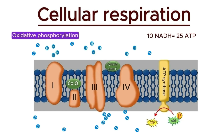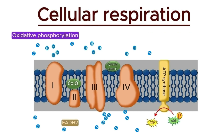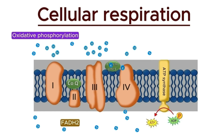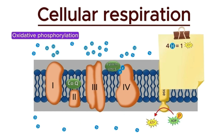Now let's determine how many ATP molecules are produced from FADH2. As mentioned earlier, FADH2 enters the electron transport chain at complex two, skipping complex one. Therefore, it only pumps six protons across the membrane. Since four protons are required to generate one ATP molecule, the oxidation of one FADH2 molecule results in the production of approximately 1.5 ATP molecules.